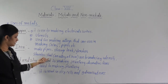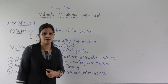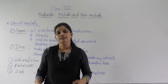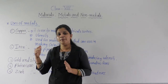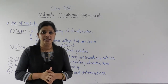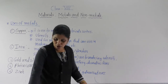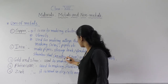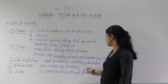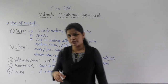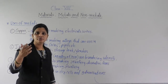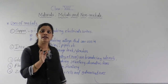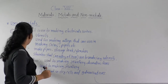Stainless steel is an alloy of iron. Most of the utensils we use are made up of stainless steel. Stainless steel is not a separate metal — it is an alloy of iron. Whichever utensils you are using at home are mostly made up of stainless steel, and stainless steel is an alloy of iron.